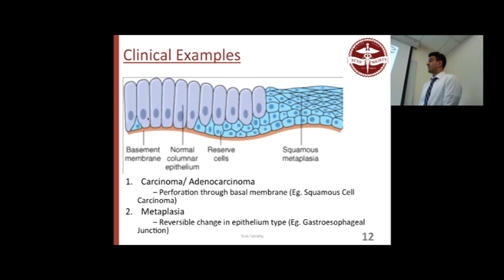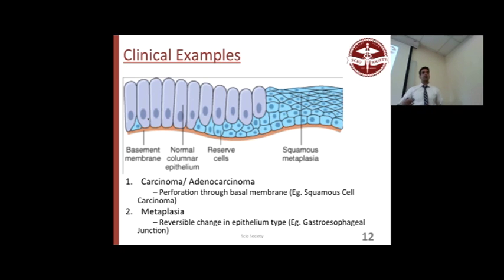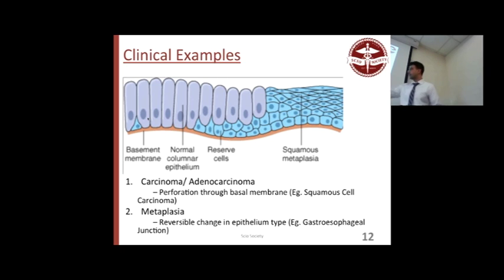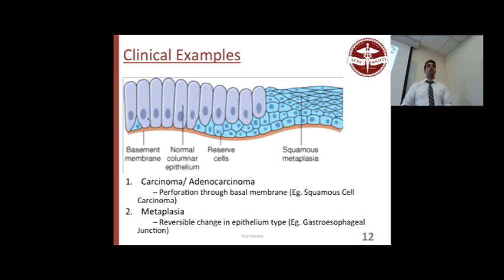Carcinoma is cancer of the epithelium. Adenocarcinoma is cancer of the glands — if you have cancer within the gland, that's adenocarcinoma; if within the external epithelium, that's carcinoma. Metaplasia is reversible — for example, acid reflux causes esophageal cells to convert to another cell type. It's a protective feature — cells becoming stronger — but it's reversible if you remove the stimulus.